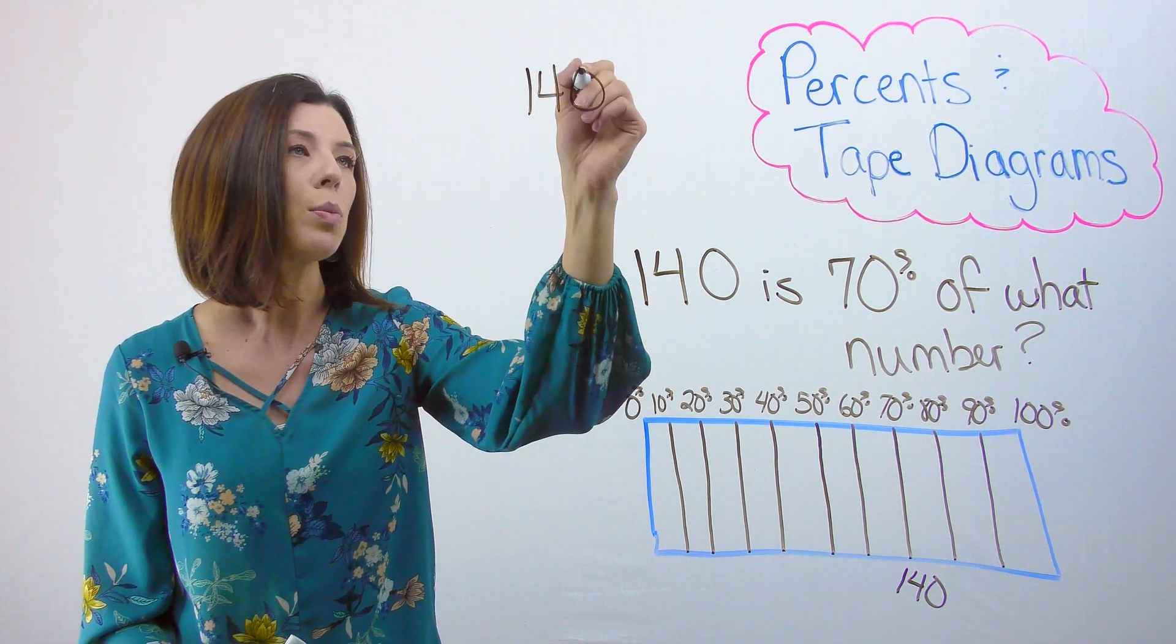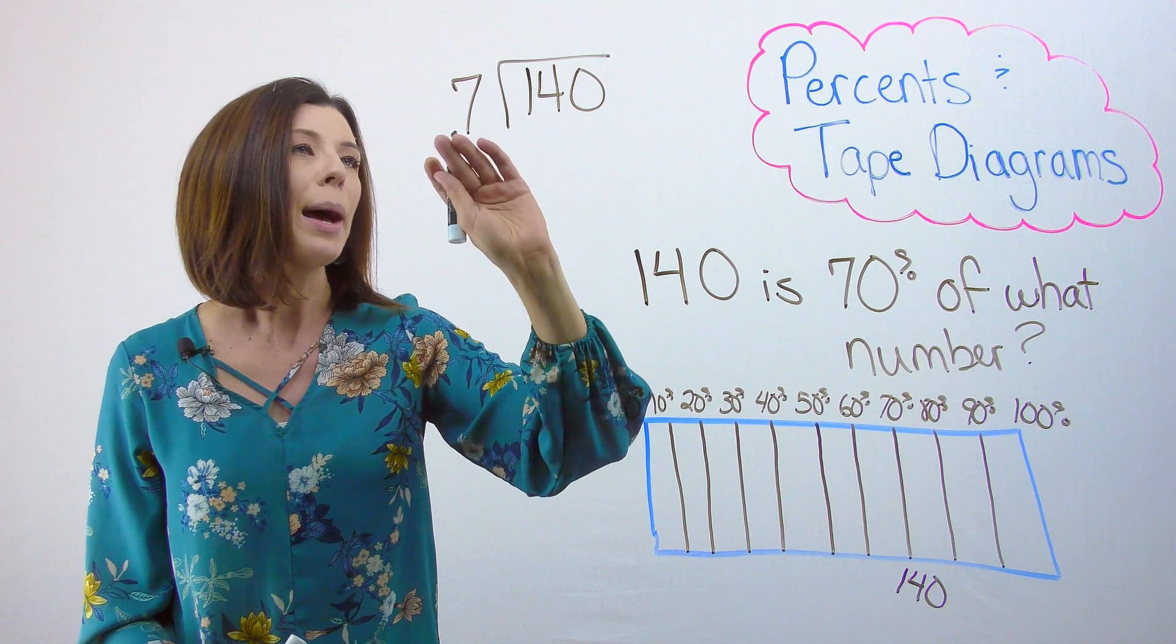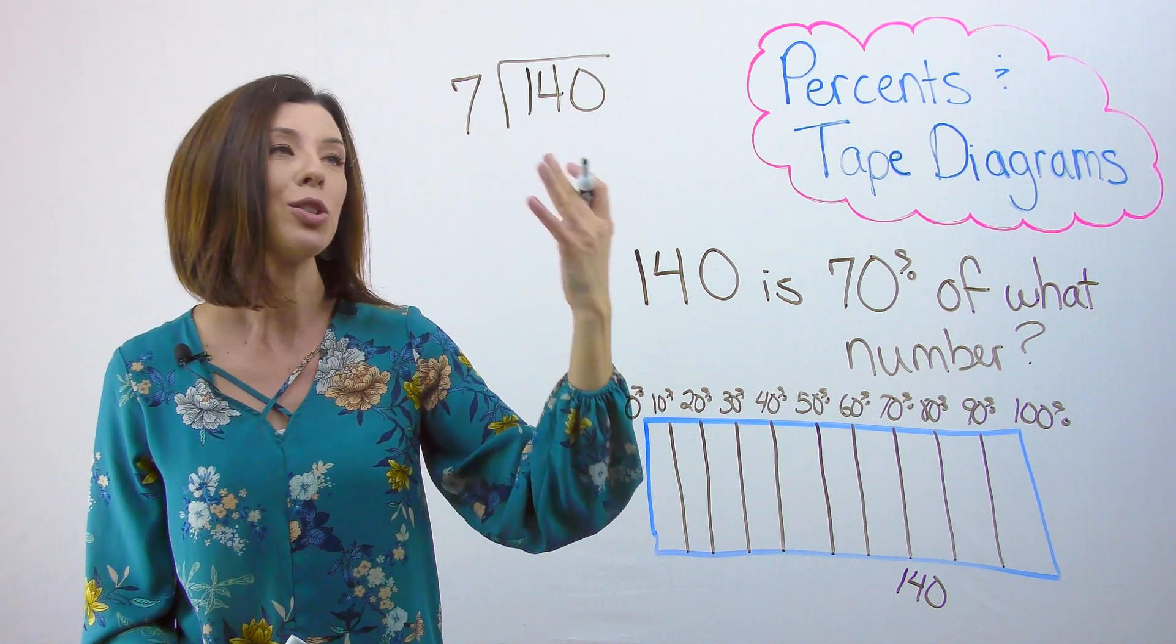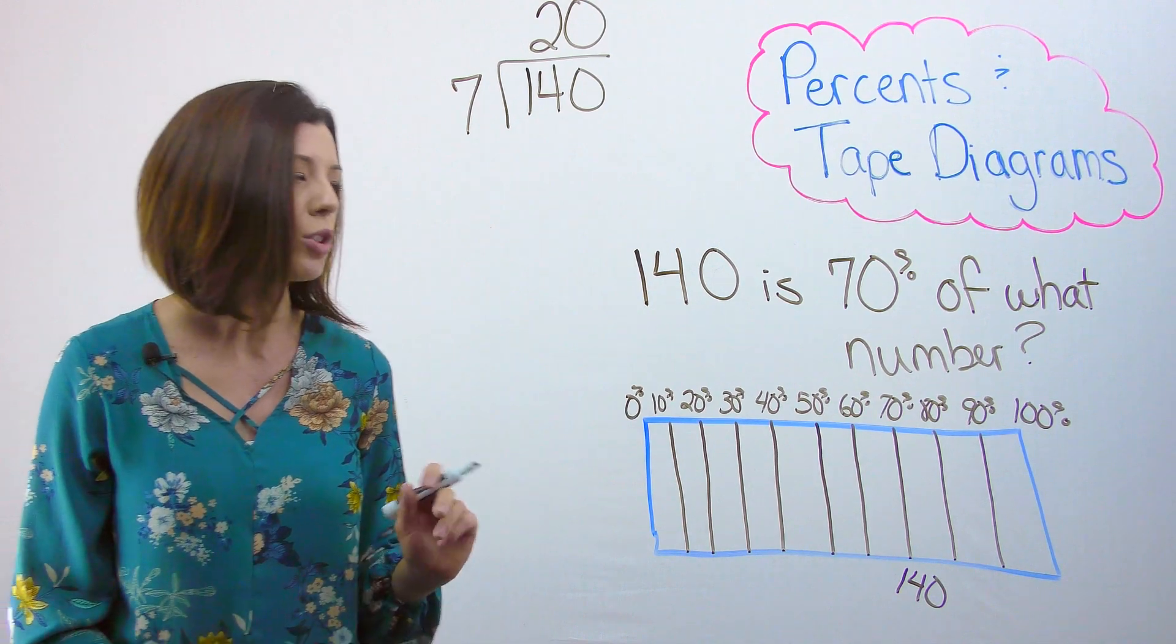So I can divide this, 140 divided by 7, and I see that I can use partial quotients, I can use traditional. It's pretty easy to see that each of these is going to represent 20.